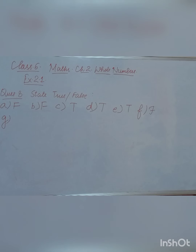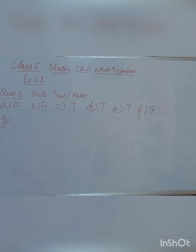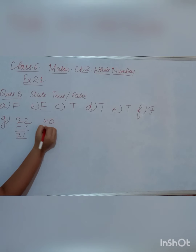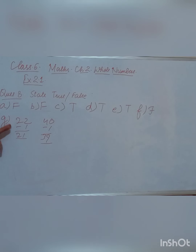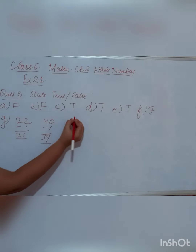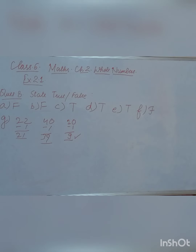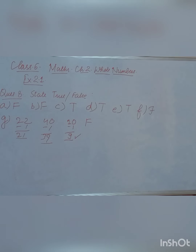The G part says: 'The predecessor of a 2-digit number is never a single digit number.' This is false. The predecessor means minus 1. If we take any 2-digit number like 22 minus 1 = 21 (2-digit), or 40 minus 1 = 39 (2-digit), those stay 2-digit. But consider 10, which is also a 2-digit number — its predecessor is 9, which is a single digit. So the statement is false — the predecessor of a 2-digit number can be a single digit.